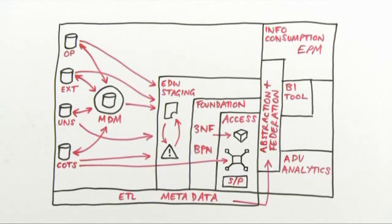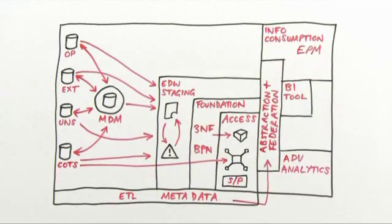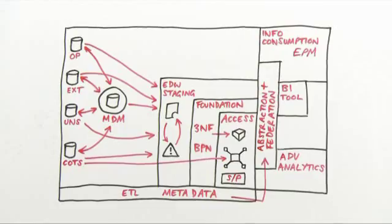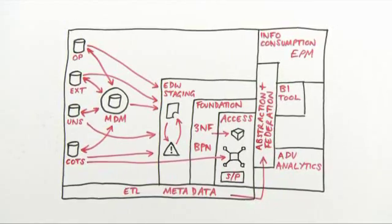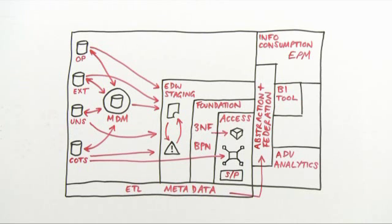Here we have the reference architecture with the various groups of information consumer. If we consider the Enterprise Performance Management Group first, they are both consuming information as well as creating it. For example, they are creating new plans and forecasting information. It's a moot point whether the EPM box should be on the right hand side of the diagram at all. Perhaps it's just another information source. This new information produced by EPM is worthy of being consumed by a wider audience.